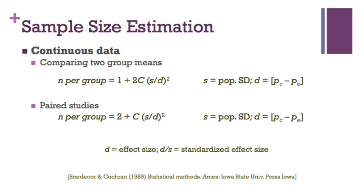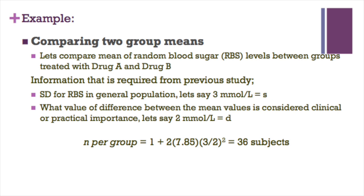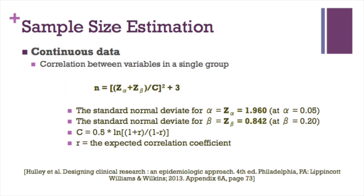For example, let's compare the mean of random blood sugar RBS levels between groups treated with drug A and drug B. Information that is required from previous study: SD for RBS in general population is 3 millimole per liter, and clinical importance difference is 2 millimole per liter. Thus number of samples required per group is 36 subjects.